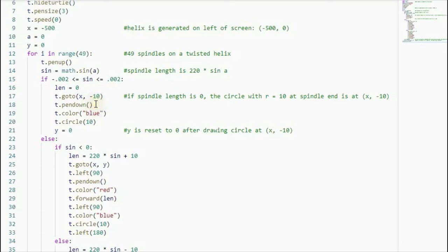And then I am ready to draw the circle. The circle is blue and then the circle radius is 10. Now after drawing the circle when the spindle length is zero, I reset the y to zero.